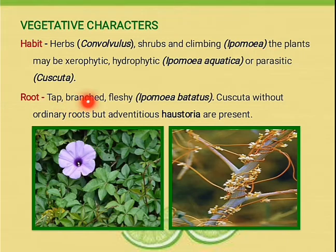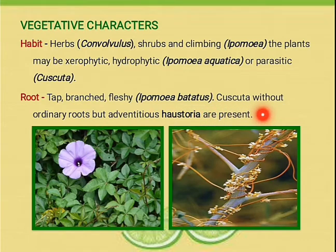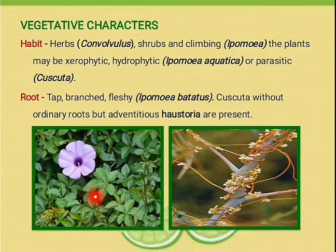Root: taproot, much branched. Fleshy root present in Ipomoea batatas. Cuscuta without ordinary root but adventitious haustoria are present. Haustoria are roots of a parasitic plant that penetrate host tissue and draw nutrients from it. Here we can see the Ipomoea climber. The second image shows Cuscuta reflexa, which is a parasitic plant.